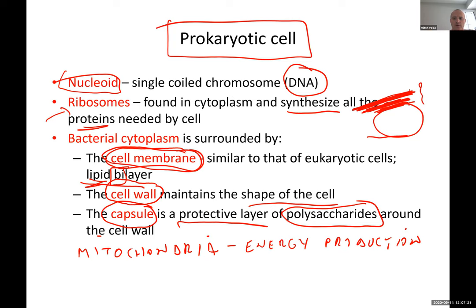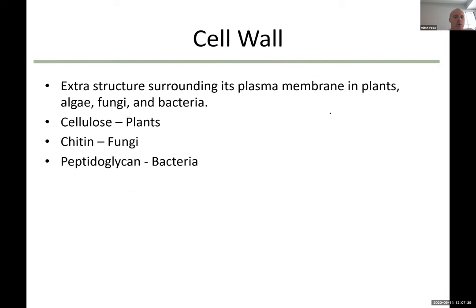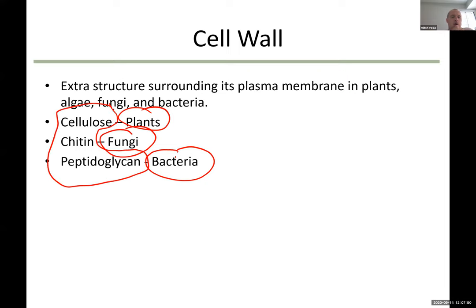The cell membrane is the lipid bilayer that encapsulates the cytoplasm. The cell wall helps with shape, and the capsule is the protective outer layer. Cell walls are not only found in bacteria — they are also found in plants and fungi. The cell wall in plants is made of cellulose, in fungi of chitin, and in bacteria of peptidoglycan.